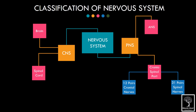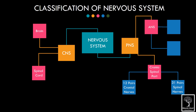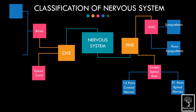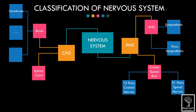The 31 pairs of spinal nerves arise from the corresponding spinal segments. The autonomic nervous system comprises the sympathetic and parasympathetic nervous systems. The human brain has three main parts: the cerebrum, cerebellum, and the brain stem.